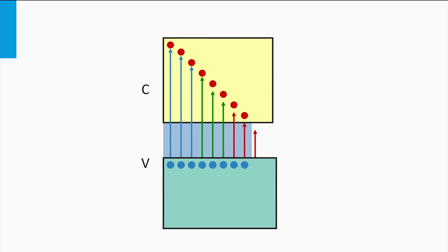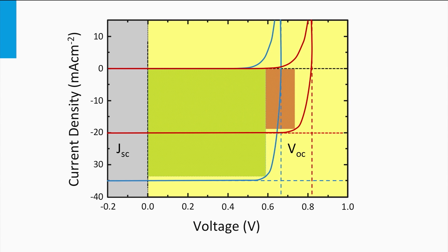If we now consider an absorber material with a lower bandgap, we see that more photons in the spectrum can excite charge carriers. This material will result in large short circuit current densities. However, due to the smaller bandgap, the splitting of the quasi-Fermi levels and the resulting open circuit voltage will become smaller. This is reflected in the blue JV curve. The JV curve of the solar cell with the low bandgap material has a larger short circuit current density, whereas the open circuit voltage is smaller.